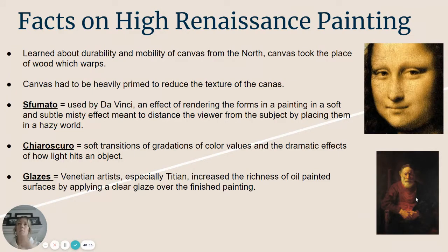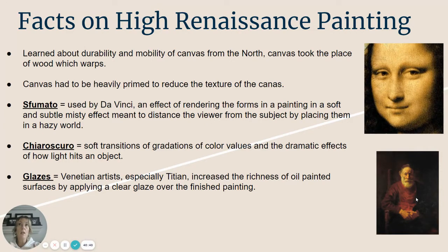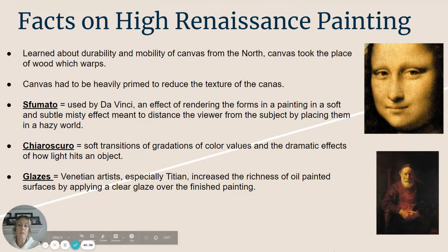Glazing is something Venetian artists invented. Painting with beautiful oil paint — introduced by Gothic art — artists like Titian, one of our Venetian painters, realized that if you put a clear glaze over top of your oil paint, not only will it help seal it, but it'll brighten everything up tremendously. Imagine almost like a clear polyurethane going over all these colors and brightening everything up immensely.